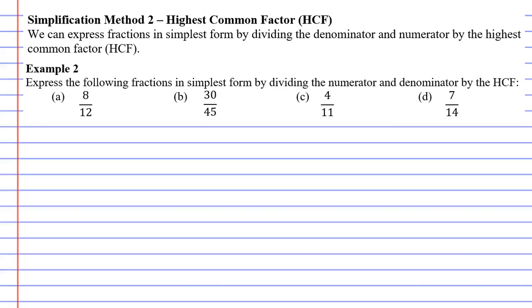In this video, we're going to look at simplification method 2, which involves using the highest common factor. So what we do is we look at both numbers in our fraction, and we divide them by the highest common factor. Let's just get straight into the example, looking at question A.